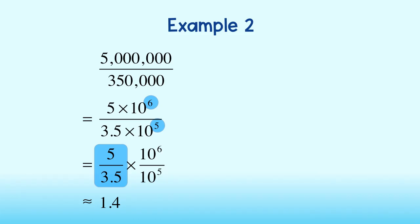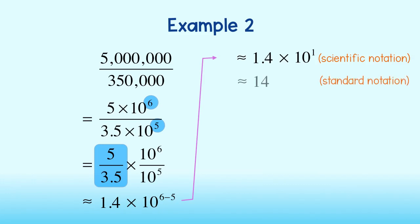Then, by the properties of exponents, the quotient rule tells us to subtract exponents. Subtract exponents to get 10 to the first power. Our answer is 1.4 times 10 to the fourth power. Or we can write this in standard notation to get 14,000. Good job.